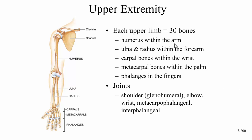Each upper limb has 30 bones. The humerus is within the arm — we call it the humerus because it's attached to your funny bone. In the forearm we have the ulna and the radius. In anatomy, 'arm' refers specifically to the upper portion, and 'forearm' to the lower portion.